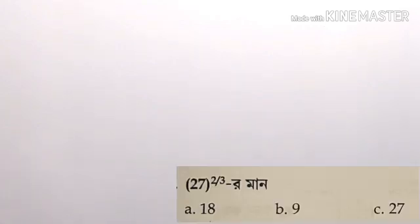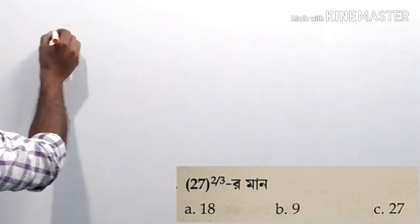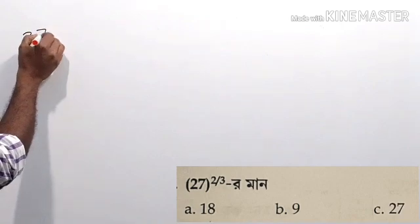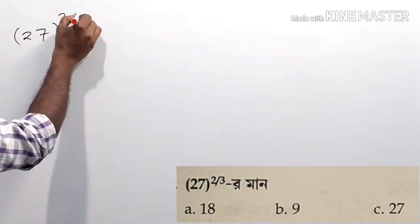Let's start with the first question, which is 7 to the power of 23. So, 7 to the power of 23.